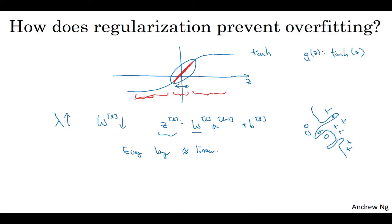So just to summarize, if the regularization parameter is very large, the parameters W are very small, so z will be relatively small, kind of ignoring the effects of b for now. So z will be relatively small or really, we should say it takes on a small range of values. And so the activation function, if it's tanh say, will be relatively linear. And so your whole neural network will be computing something not too far from a big linear function, which is therefore a pretty simple function rather than a very complex, highly non-linear function. And so it's also much less able to overfit. And again, when you implement regularization for yourself in the program exercise, you'll be able to see some of these effects yourself.